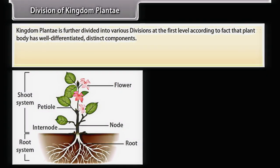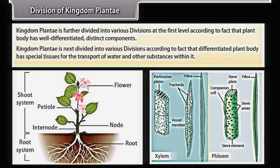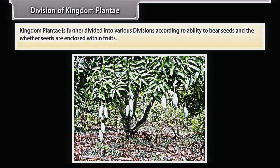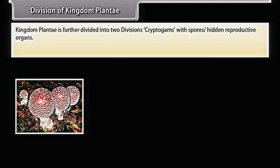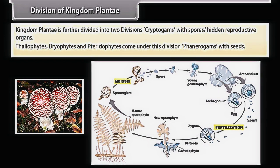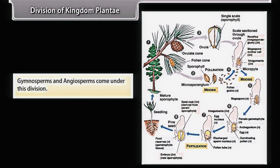Kingdom Plantae is further divided according to whether the plant body has well-differentiated distinct components, whether it has special tissues for transport of water and other substances, and whether seeds are enclosed within fruits. Kingdom Plantae is divided into two main divisions: Cryptogams — with hidden reproductive organs (spores), which include Thallophytes, Bryophytes, and Pteridophytes — and Phanerogams — with seeds — which include Gymnosperms and Angiosperms.